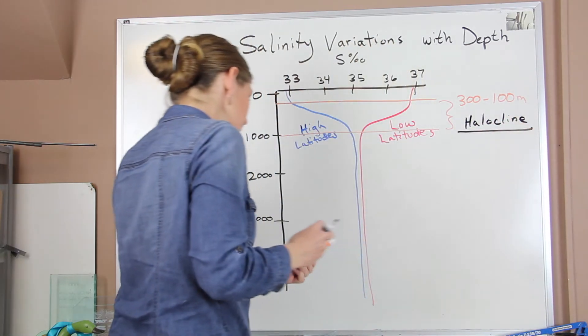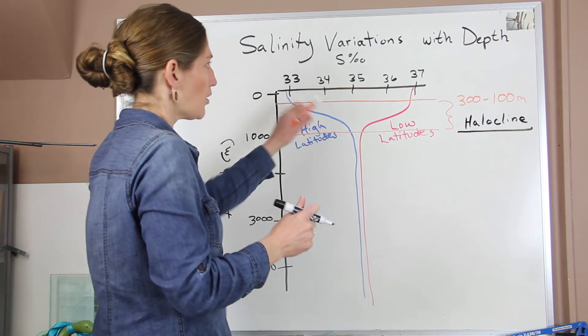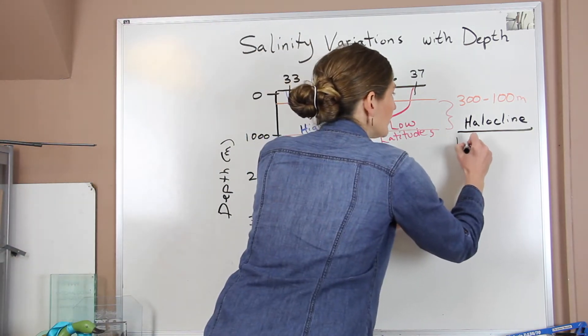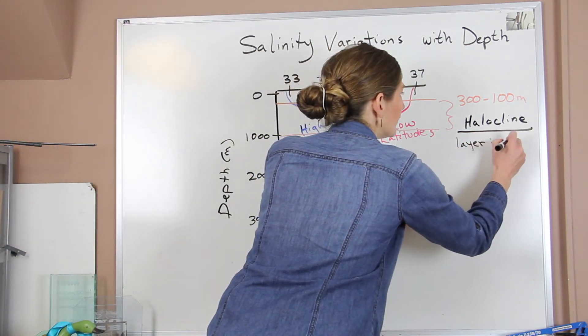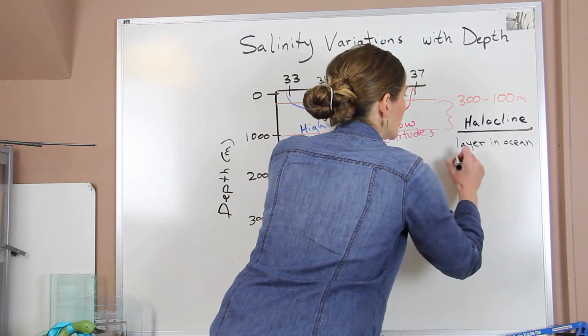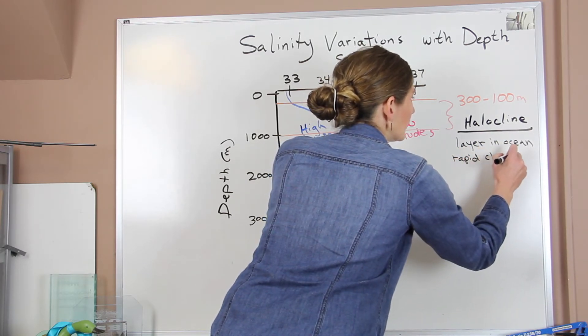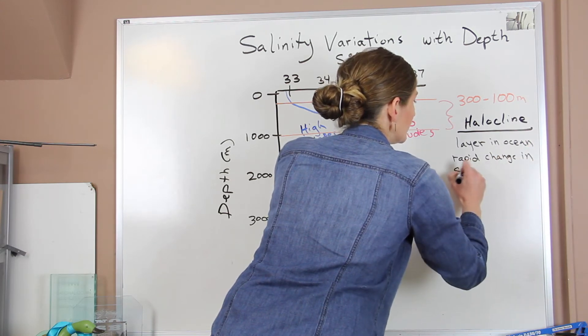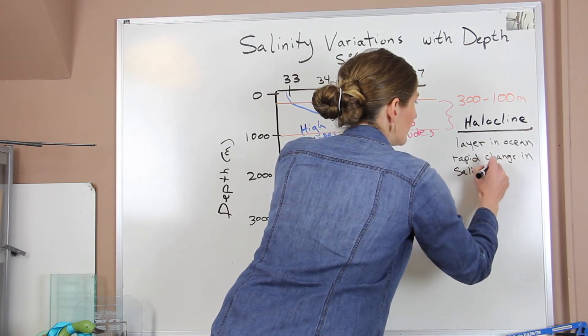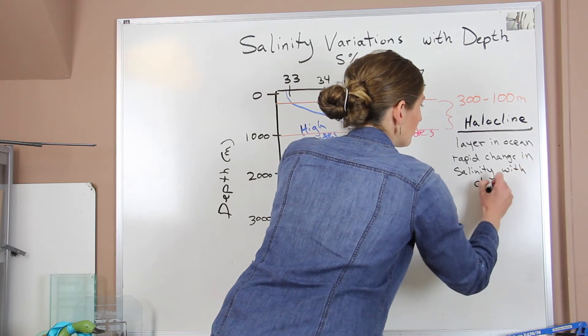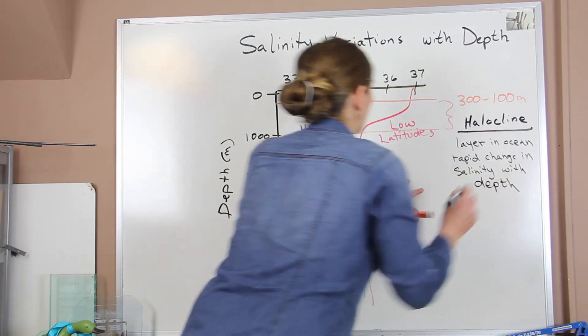And the halocline is just a layer in the ocean where we have a rapid change in salinity with depth.